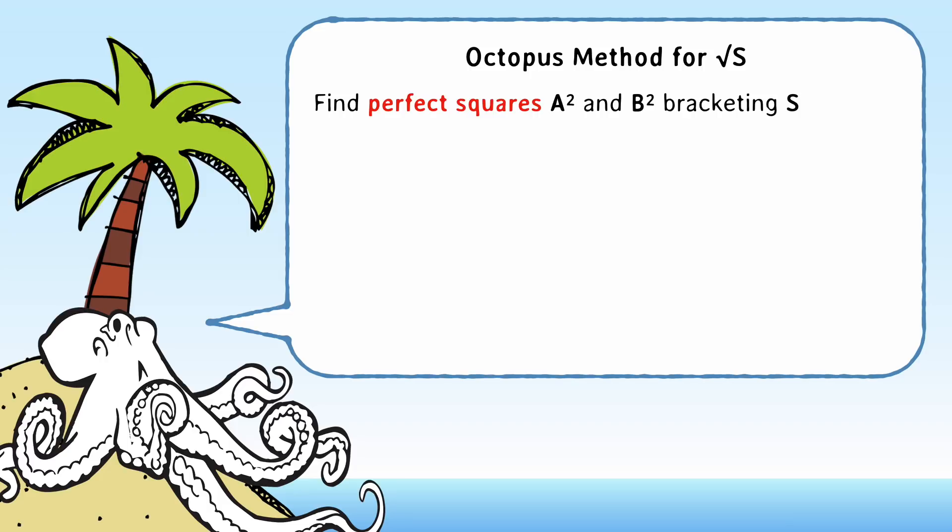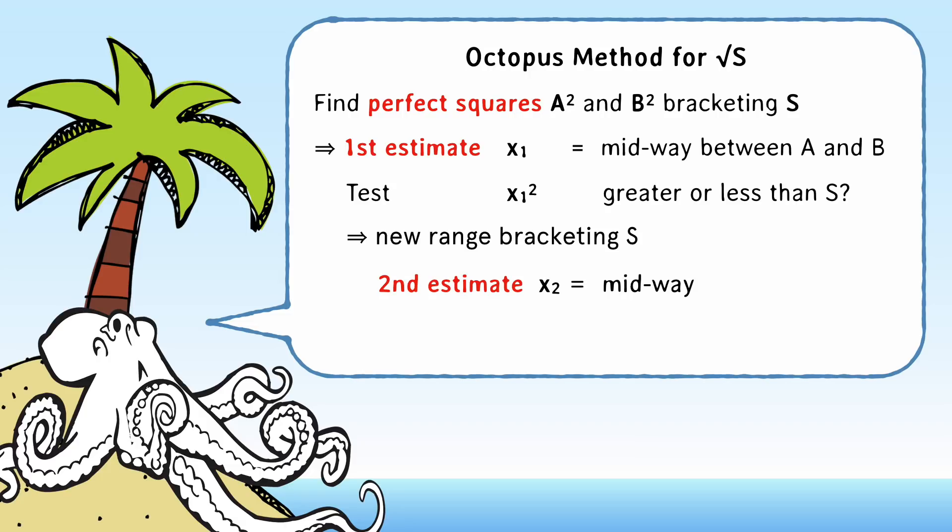Find suitable bounds for your answer using your knowledge of perfect squares, choose a value halfway in between, square it and compare, split the remaining interval, and keep on iterating until you reckon you're close enough.